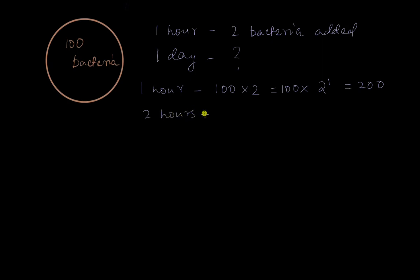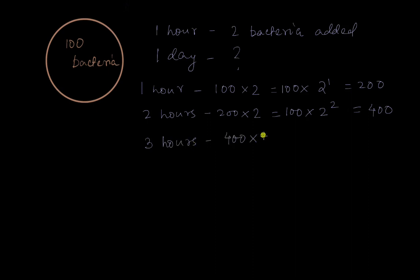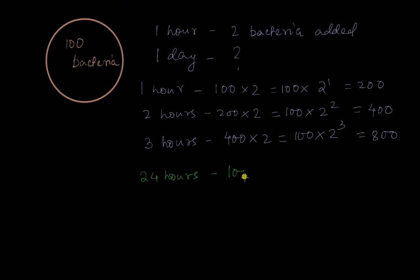After two hours, we already have 200 bacteria and we multiply by 2 again — we can write this as 100 times 2 to the power 2, which is 400. For three hours, it's 400 times 2, which equals 100 times 2 to the power 3, giving 800. You can see the pattern: raise 2 to the power of the number of hours and multiply by 100. So after one day, which is 24 hours, the answer is 100 times 2 to the power 24.